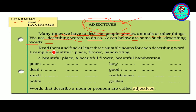Read them and find at least three suitable nouns for each describing word. For example: 'beautiful' — beautiful place, beautiful flower, beautiful handwriting.